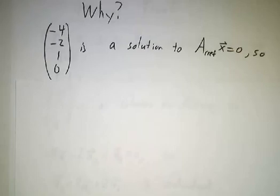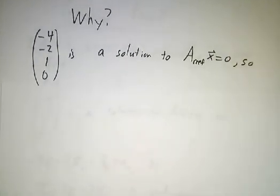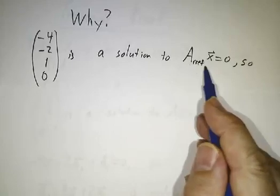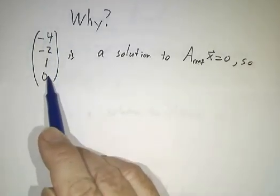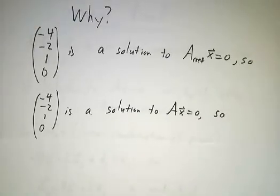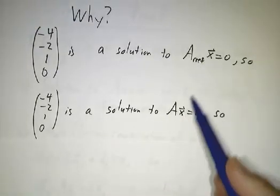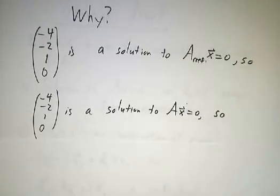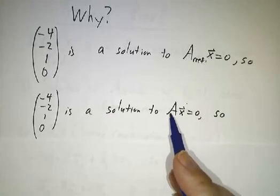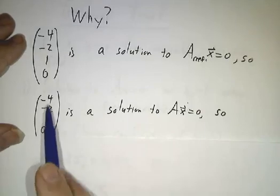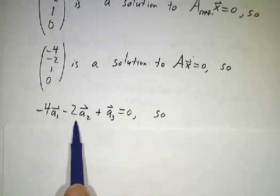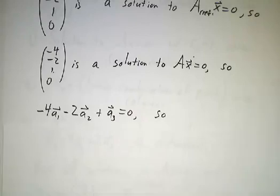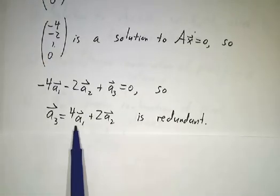So let's see why this works. We worked out the solutions to Ax equals zero by figuring out the reduced row echelon form and finding the solutions to A-rref x equals zero. And we saw that was a solution — which means it's also a solution to Ax equals zero, because these two systems of equations have the exact same solutions. Now remember what Ax means: Ax is a linear combination of the columns of A. So if A times (negative 4, negative 2, 1, 0) is zero, that means negative 4 times the first column minus 2 times the second column plus the third column is zero.